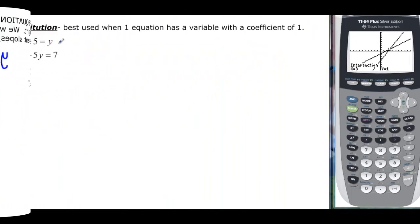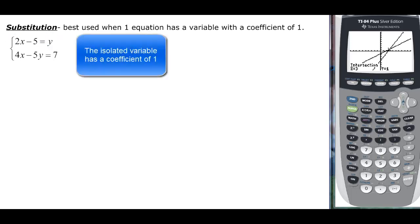Now we can also use substitution. Substitution is best used when you have one variable equal to everything else with a coefficient of 1. So this is perfect. What we're really going to say is this 2x minus 5 is going to replace this y.